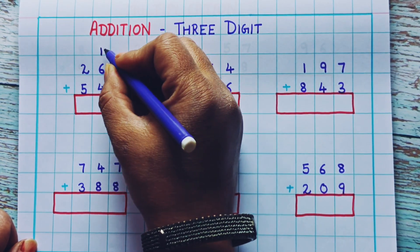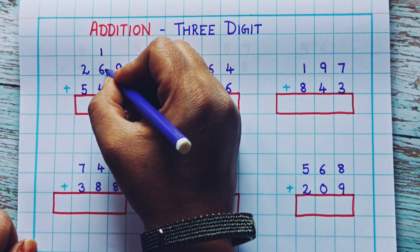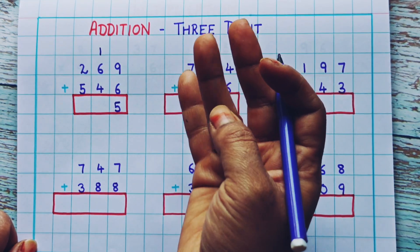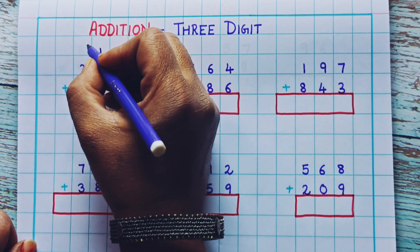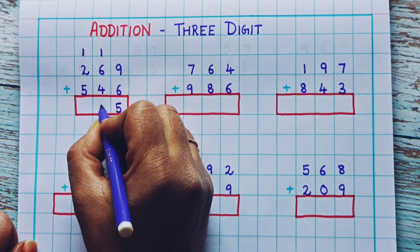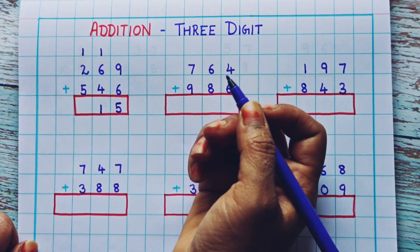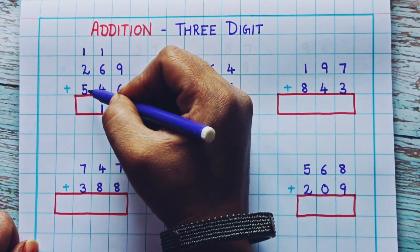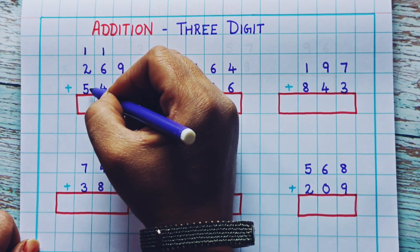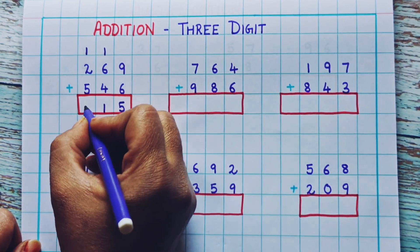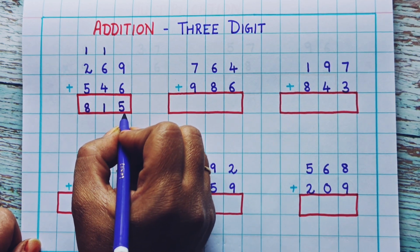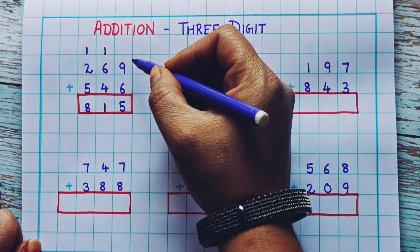Next, we are going to do the addition of the tens place. 1 plus 6 is 7, 7 plus 4: 8, 9, 10, 11. Again, 11 is a two-digit number, so 1 will go as a carryover and the other 1 will come down. Now we will do the addition of the hundreds place: 1 plus 2 is 3, 3 plus 5 is 8. So the answer is 815.